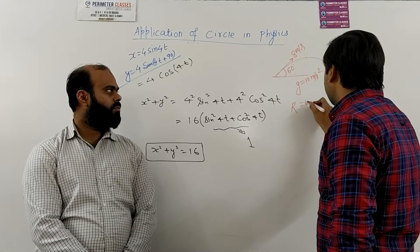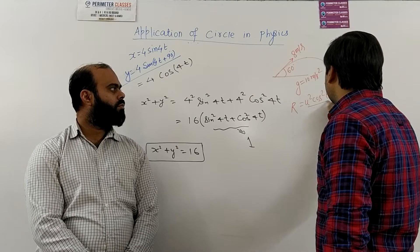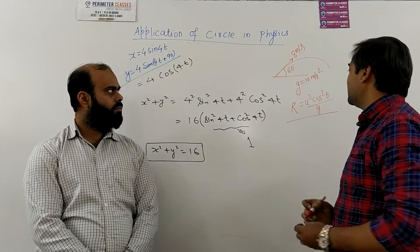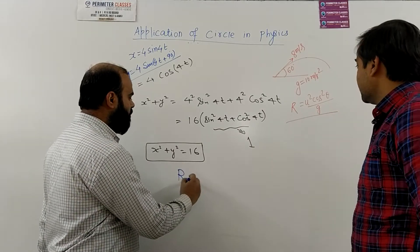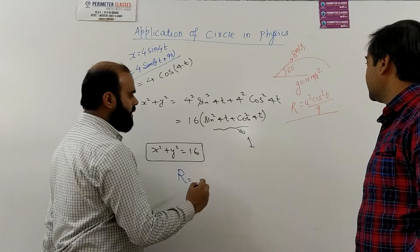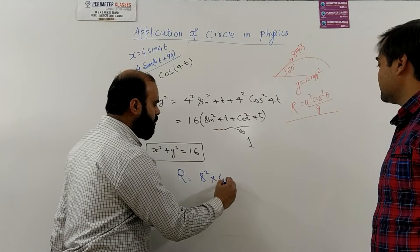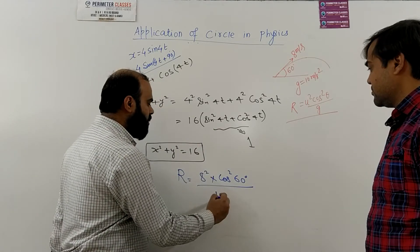The formula that we have discussed in the previous lecture comes out to be u² cos² θ upon g. So the radius of curvature after getting the values of u as 8 meter per second, cos² θ will become cos² 60 degree and g is 10 meter per second square.